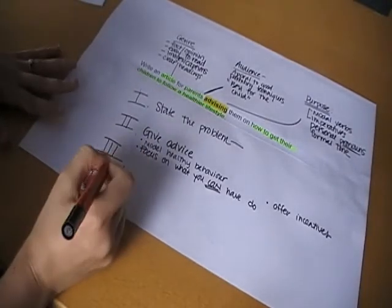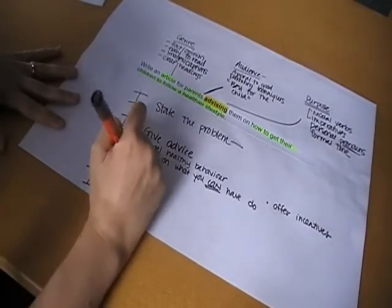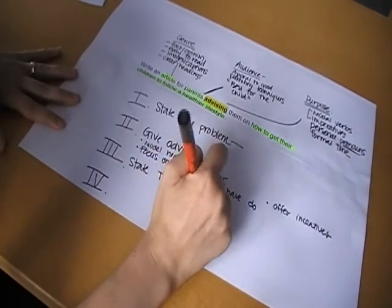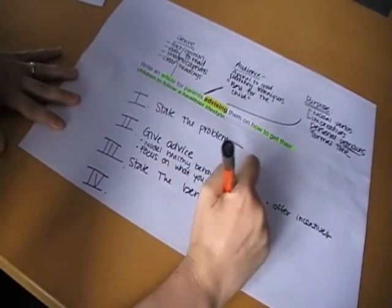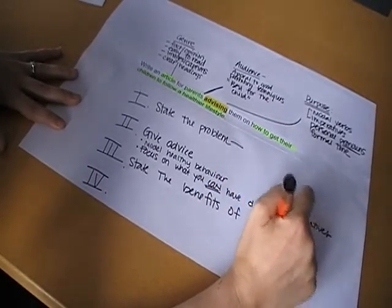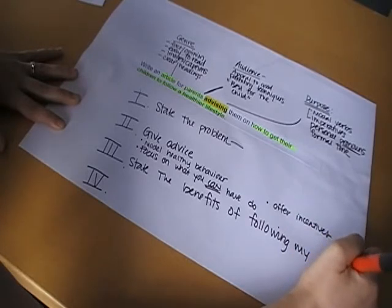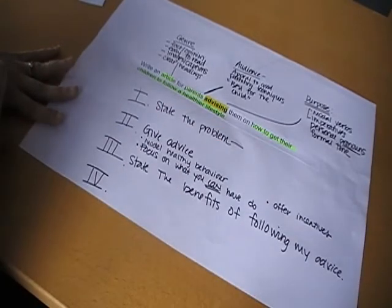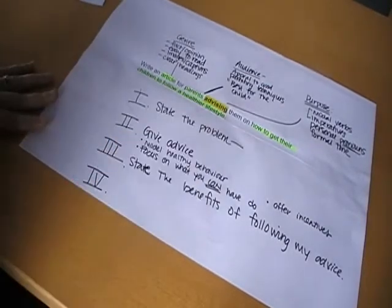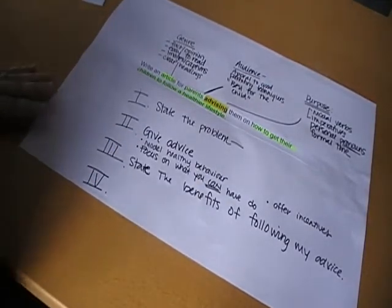The third thing here in my outline is going to be to state the benefits of following my advice. And here I'm going to reiterate the importance of having healthy children and why following my advice will make them have a healthier family as well.